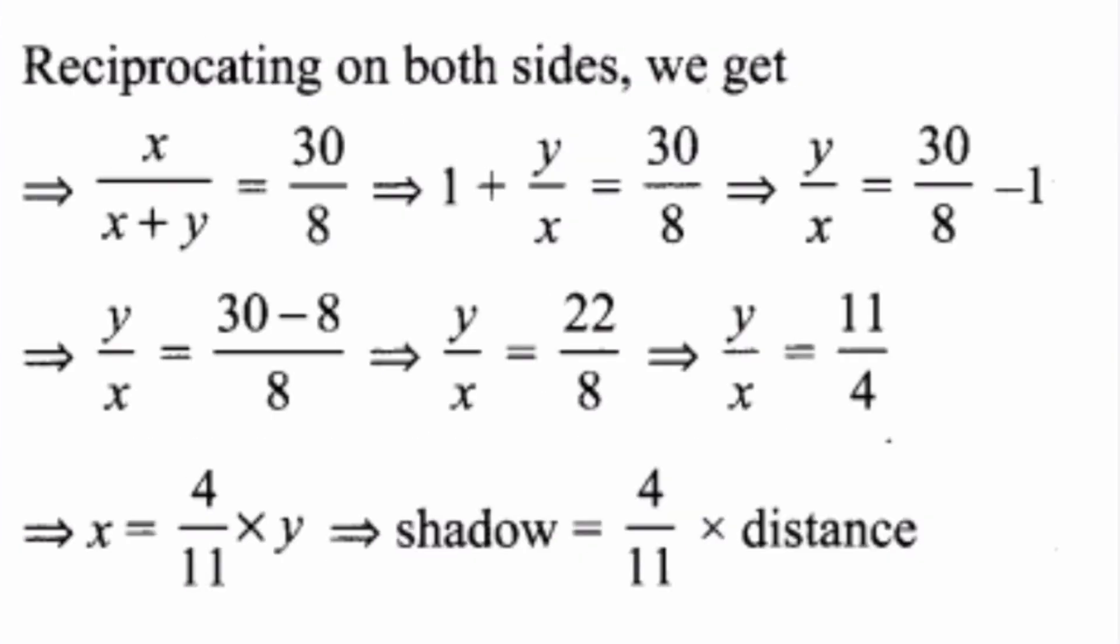That implies y by x is equal to 30 minus 8 by 8, which gives y by x is equal to 22 by 8. Dividing numerator and denominator by 2, we get y by x is equal to 11 by 4.